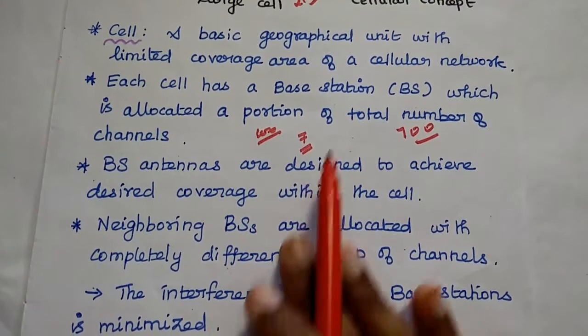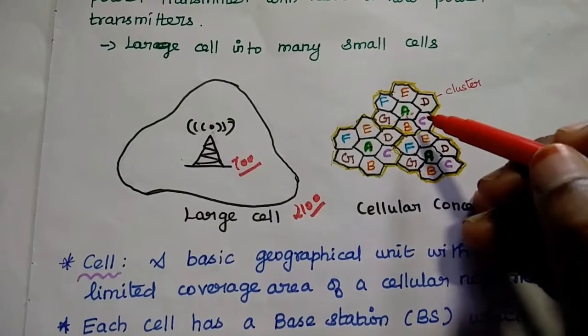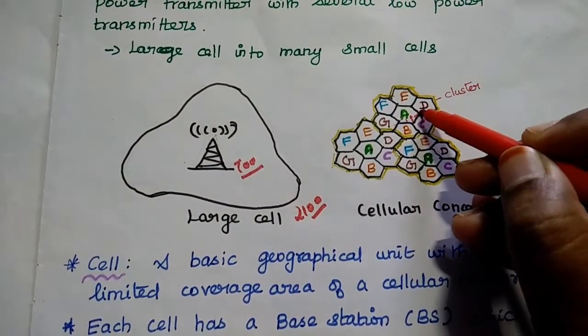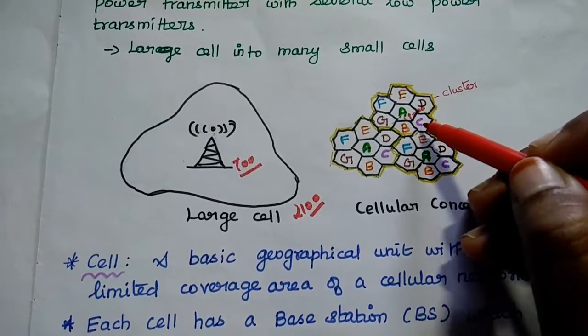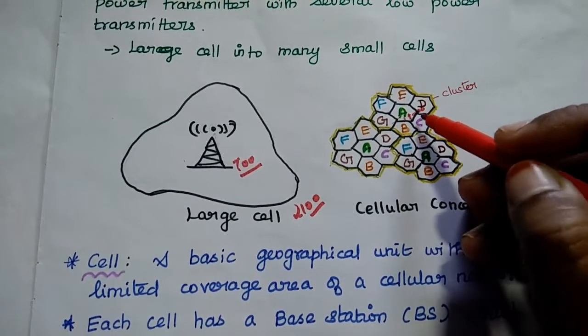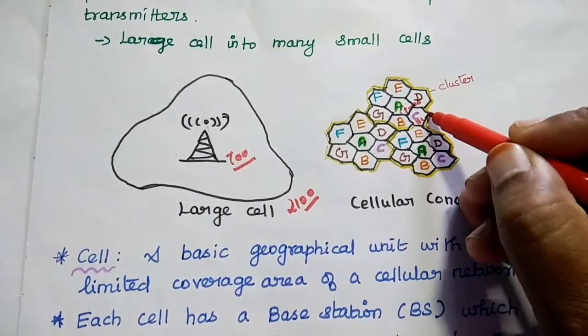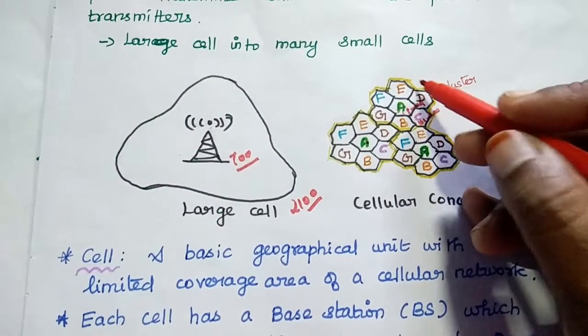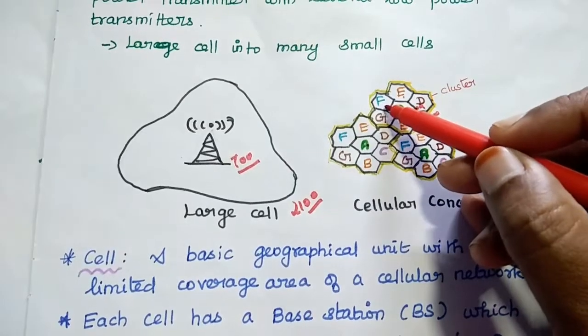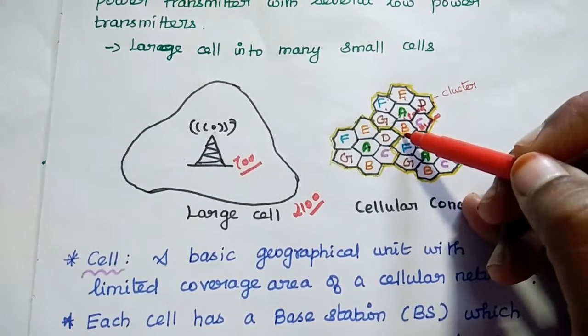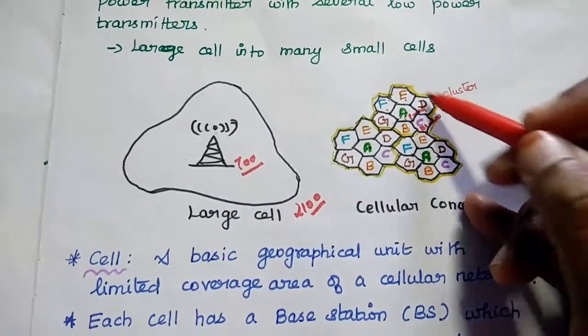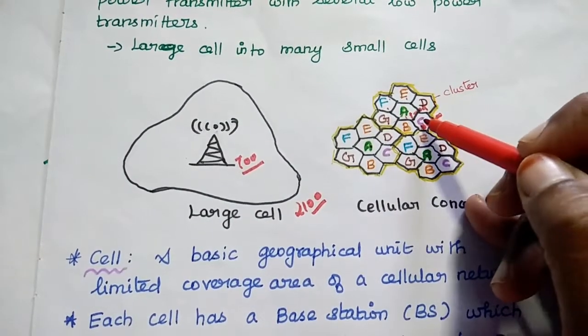The neighboring base stations. For example, in this one, if I have assigned first 1 to 100 in this A, then I should not use this 1 to 100 for this B, C, D, E, F, G. I can use 101 to 200 here, 201 to 300, 301 to 400, 401 to 500, 501 to 600, 601 to 700. Like that, I can use.